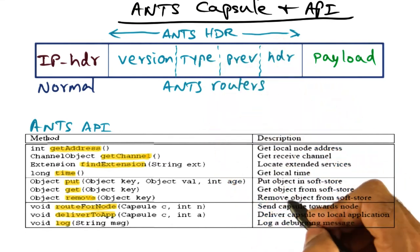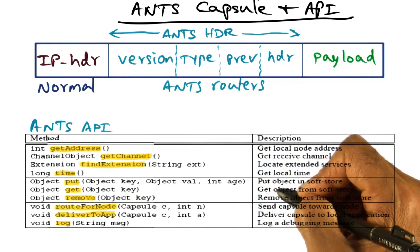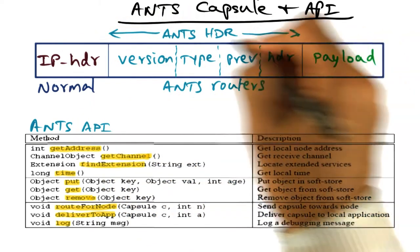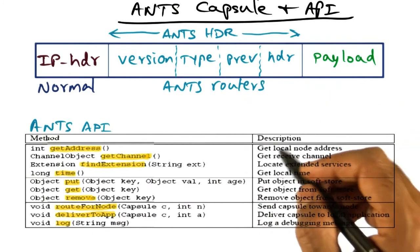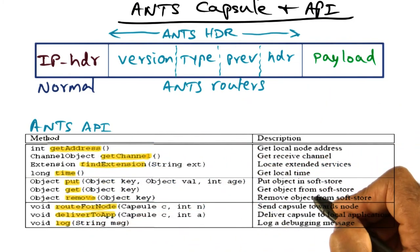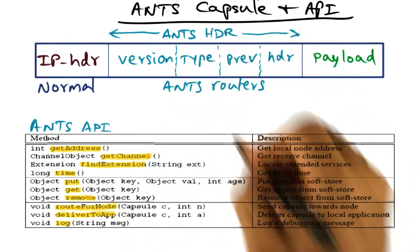So you can store the code that is associated with this type so that future capsules of the same type, when they arrive at a particular node, can retrieve the code from the soft store and execute the code that needs to be executed for processing capsules of this type. Other interesting things that you might put into the soft store are things like computed hints about the state of the network which can be used for future capsule processing for capsules of the same type.